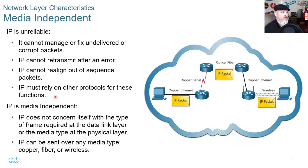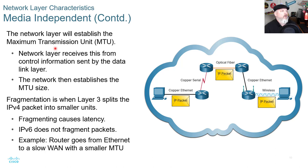IP is media independent — it does not concern itself with the type of frame required at the data link layer or the media type at the physical layer. IP can be sent over any media type: copper, fiber, or wireless. The network layer establishes the maximum transmission unit, or MTU, receiving this value from control information sent by the data link layer, and then establishes the MTU size accordingly.